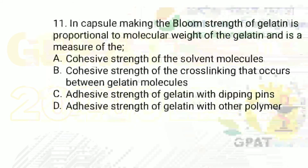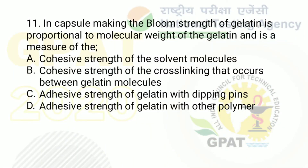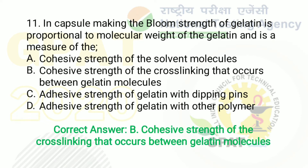The question: in capsule making, the bloom strength of gelatin is proportional to the molecular weight of gelatin and is a measure of. Option A: cohesive strength of solvent molecules. Option B: cohesive strength of the cross-linking that occurs between gelatin molecules. Option C: adhesive strength of gelatin with other polymers. The right answer is option B — cohesive strength of the cross-linking that occurs between gelatin molecules.